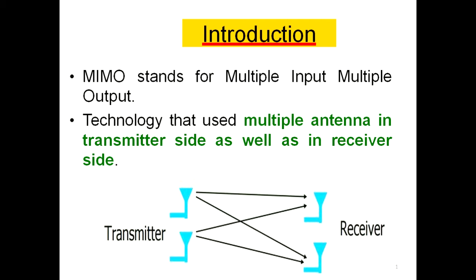MIMO is a technology that uses multiple antennas on both the transmitter side and the receiver side. This is a simple representation of MIMO, where we have connected multiple antennas at the transmitter as well as the receiver.